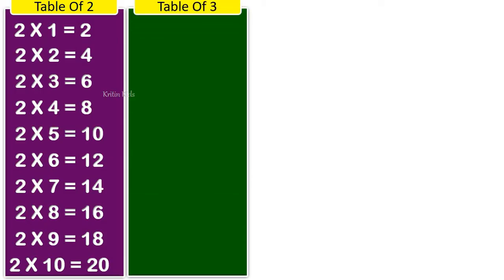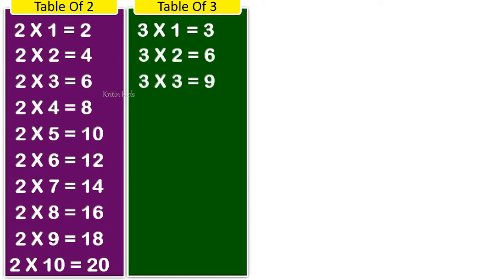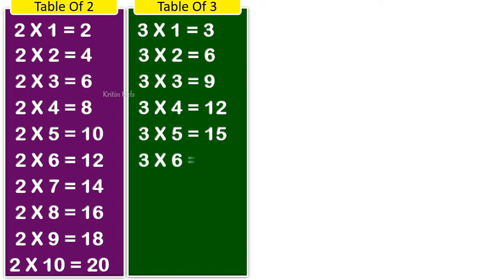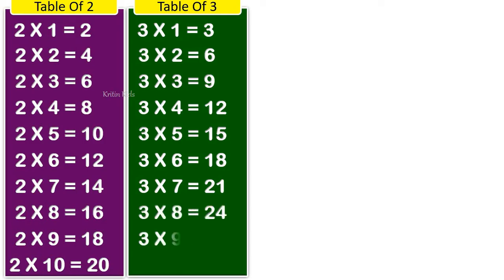Table of three. 3 1s are 3, 3 2s are 6, 3 3s are 9, 3 4s are 12, 3 5s are 15, 3 6s are 18, 3 7s are 21, 3 8s are 24, 3 9s are 27, 3 10s are 30.